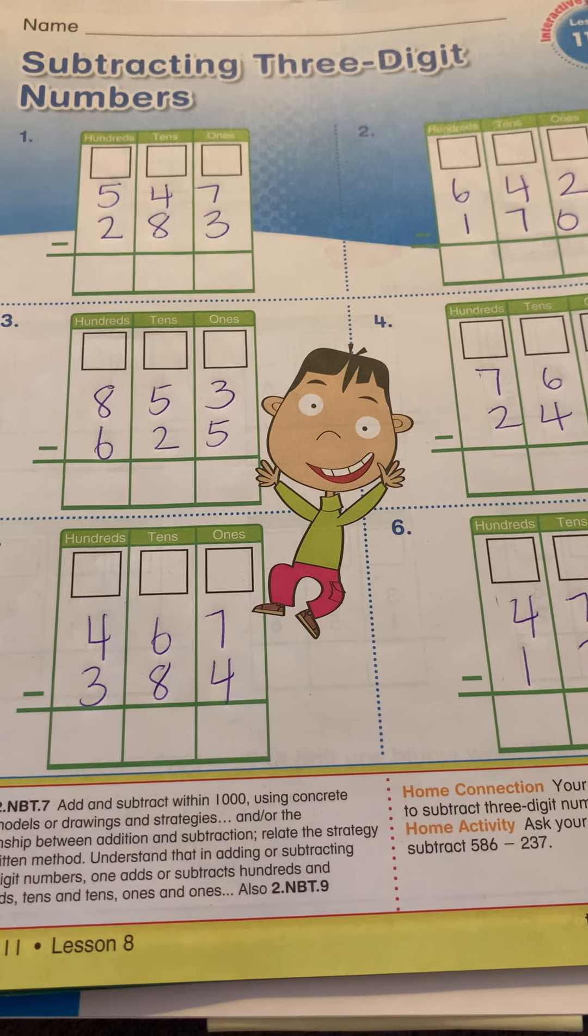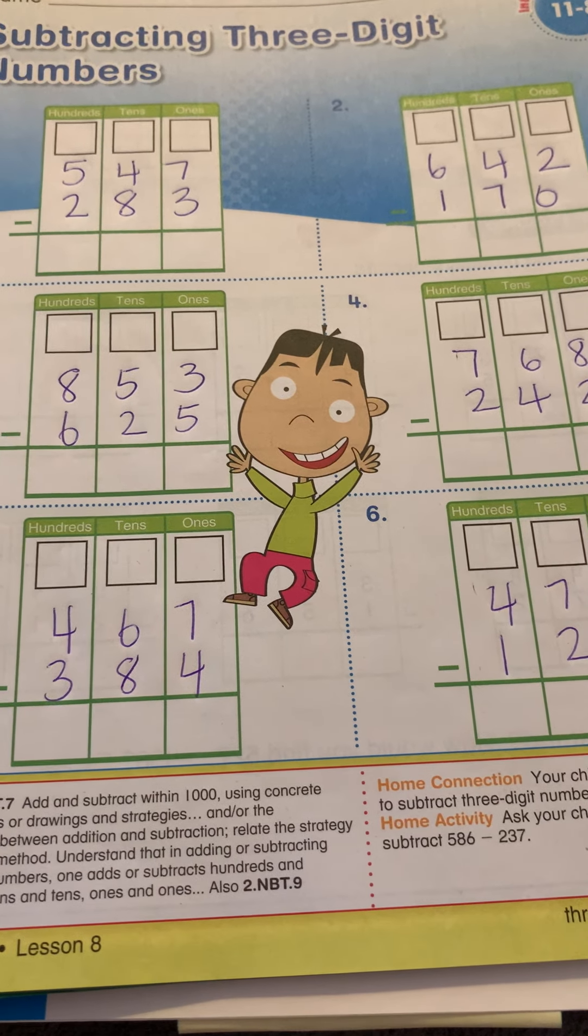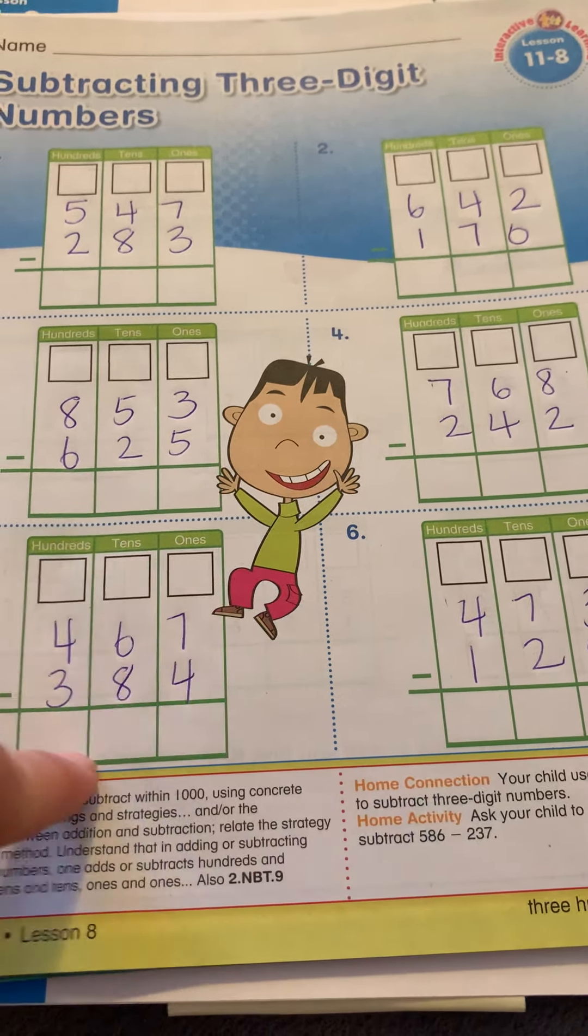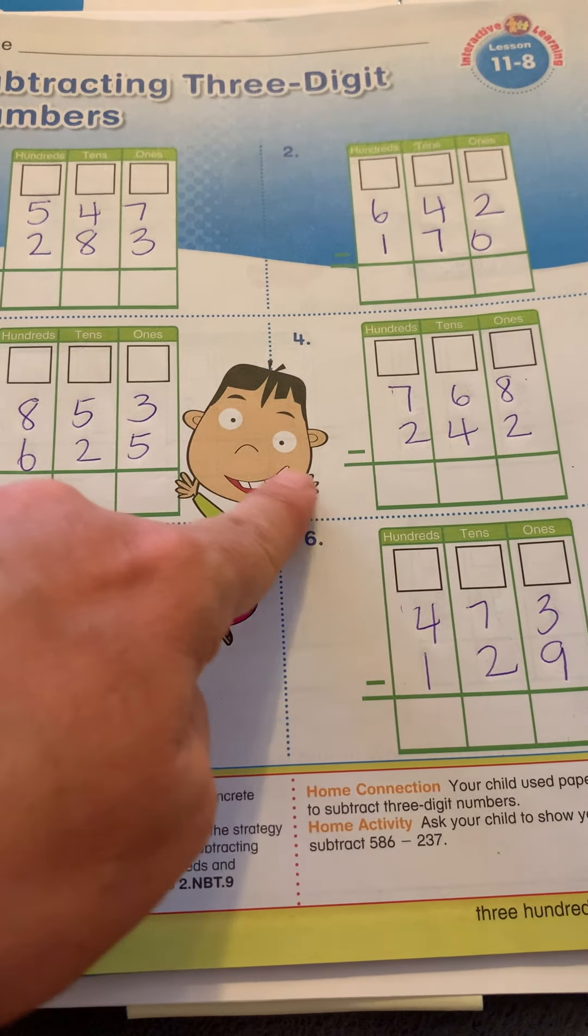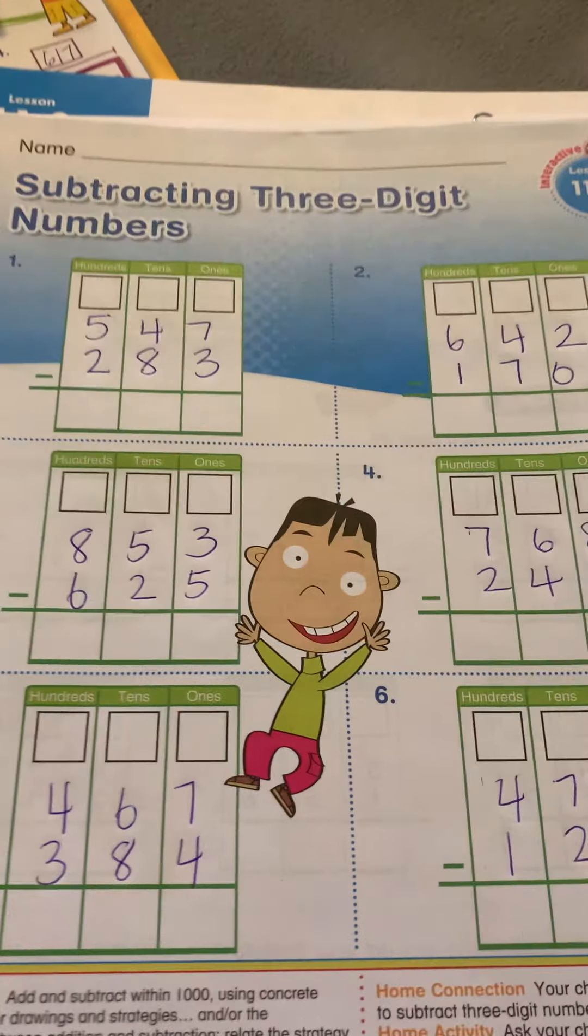Okay, so I'm going to do the same thing. I'm going to do one and two, and then I want you to pause the video, and I want you to do three, four, five, and six on your own, and then unpause the video, and we will correct together. Okay? All right, so let's look at number one.